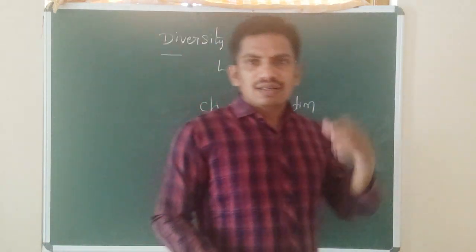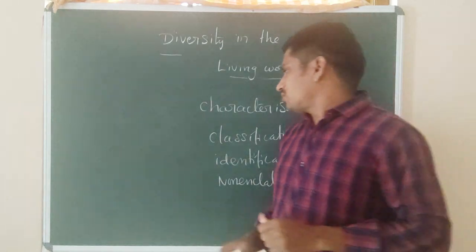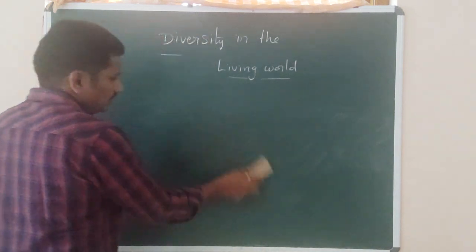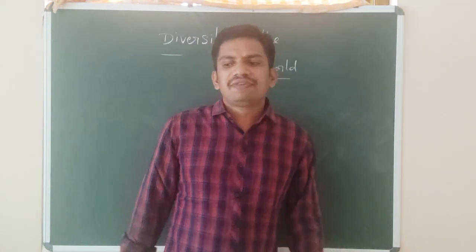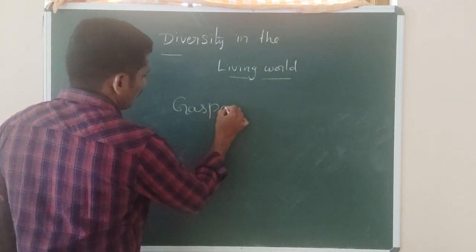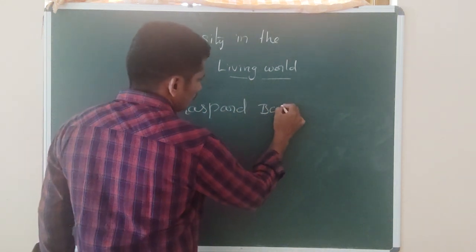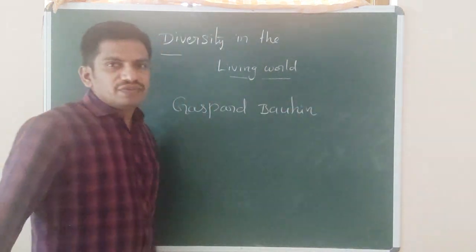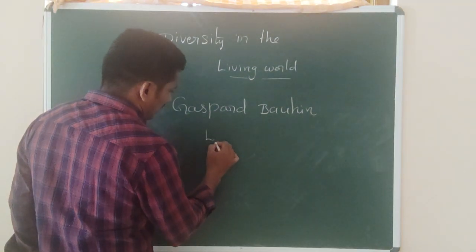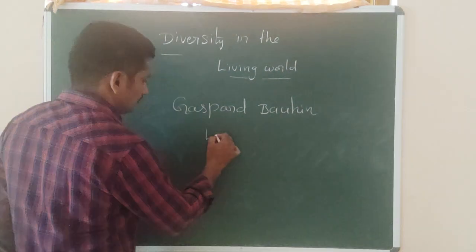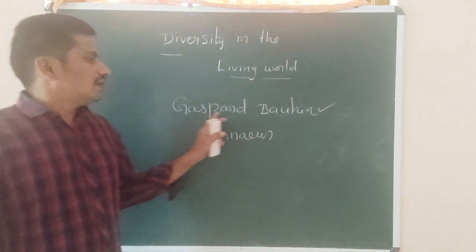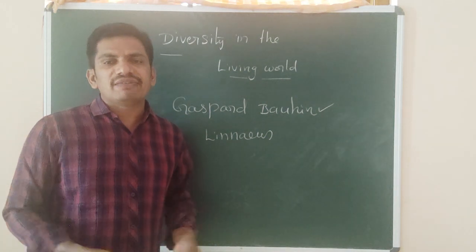These are the main concepts in taxonomy — how to identify, how to classify, and how we use that. Gaspar Bauhin first introduced the binomial nomenclature. Later, Linnaeus popularized the binomial nomenclature. Binomial nomenclature means giving names to the organisms.